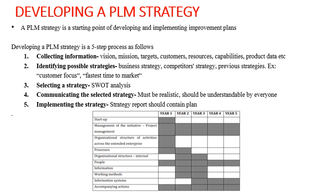Looking at the activity table, in the first year there is startup, management of initiative, and people and processes involved. Working methods are shown for years two and three, meaning working methods will change from the second year onwards through the third year. People need to be aware of all activities for all five years. Accompanying actions will happen from the first year right through to the fifth year.